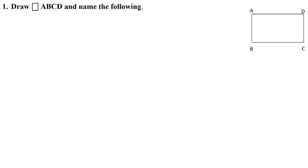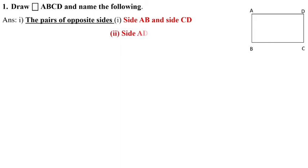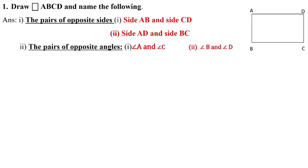Next question: draw quadrilateral ABCD and name the following. The pair of opposite sides: the opposite sides are AB and CD, AD and BC. Side AB and side CD, and the second one is side AD and side BC. The pair of opposite angles: opposite angles are angle A and angle C, and angle B and angle D.